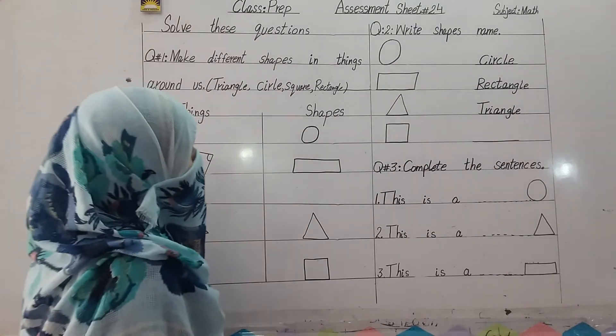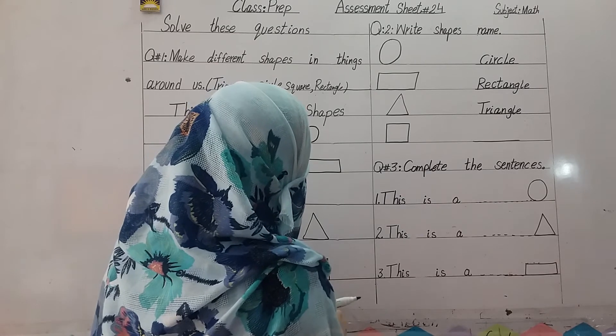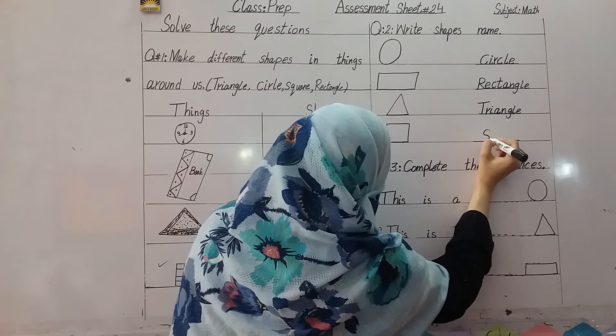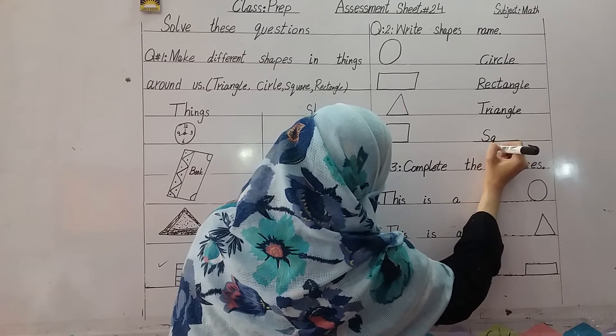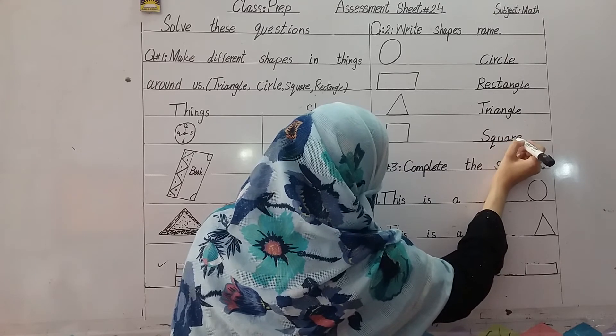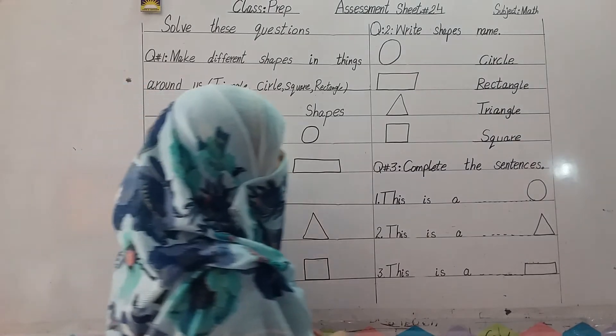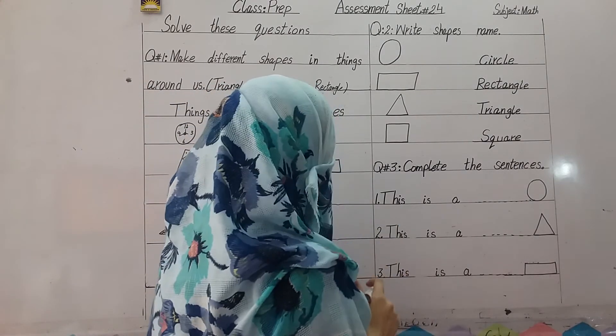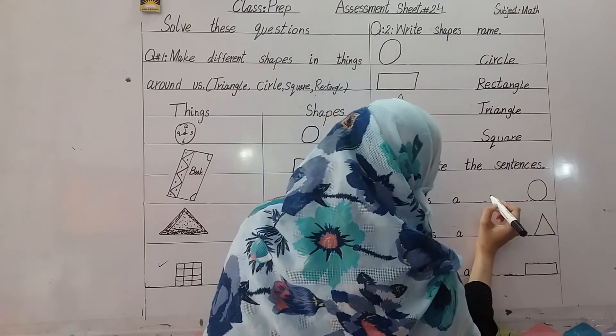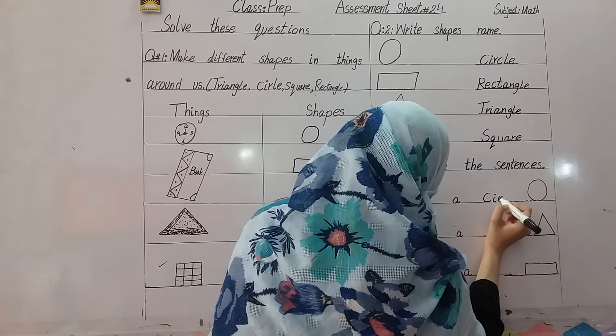Let's move to another shape name. This is a dash. So, what is this? Circle. So, here you can write circle. This is a circle.